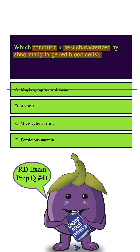Microcytic anemia can be eliminated because, as the name implies, microcytic anemia is characterized by small red blood cells. Micro meaning small, cytic meaning cells — small cells.